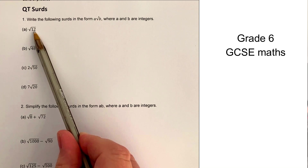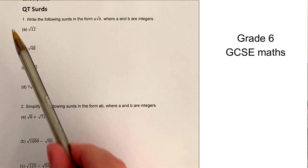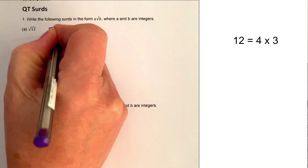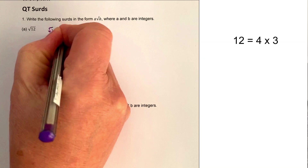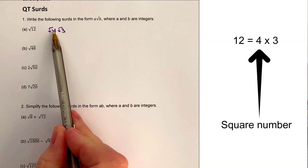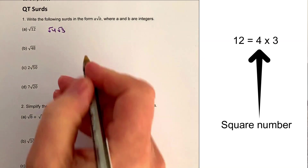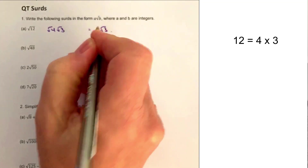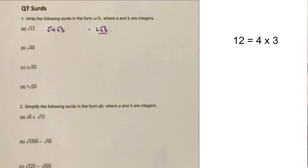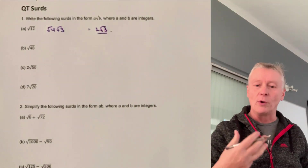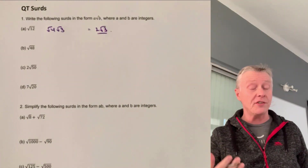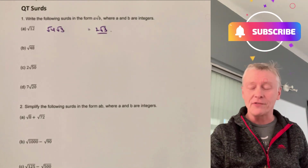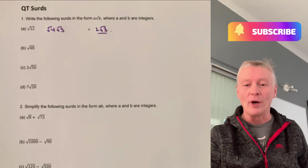So if we look at root 12, what we know is that's the same as saying root 4 times root 3. The square root of 4 is 2, so therefore that's going to be 2 root 3. And that would be the answer to the first question.